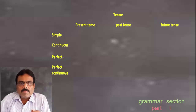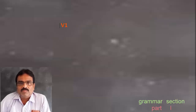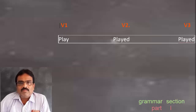In simple tense, the verb will be in its root form or base form — that is V1, V2, and V3. For example, if we take the verb 'play': play is the V1 form (present form), played is the V2 form (past form), and played is also the V3 form (past participle form). In this verb we don't find any difference between V2 and V3, between past tense and past participle.